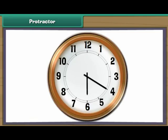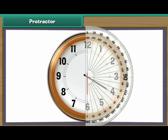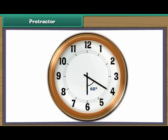This clock shows 20 past 6. The long hand is on 4 and the short hand is on 6. Place the protractor on the short hand of the clock and read the inner marking on which the long hand rests — it is 60 degrees. Therefore, the time 20 past 6 makes an acute angle.